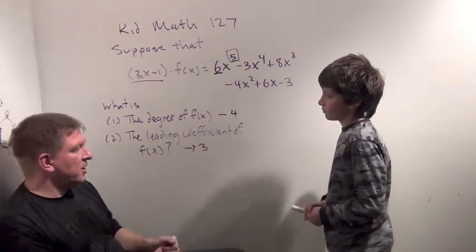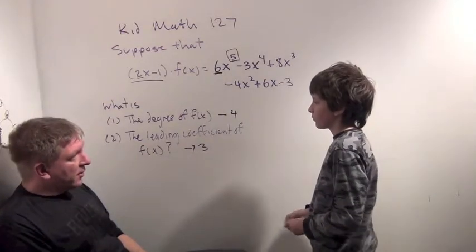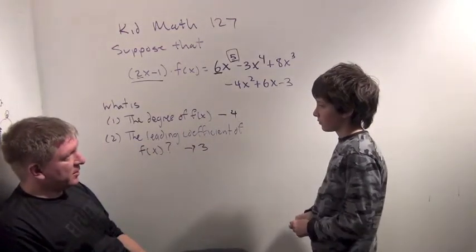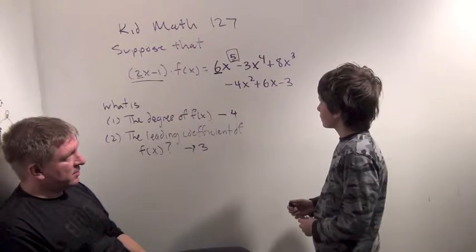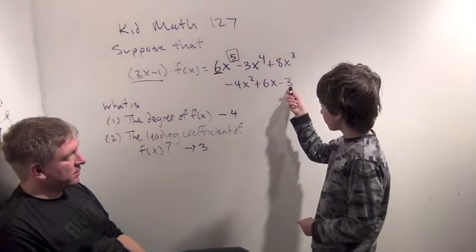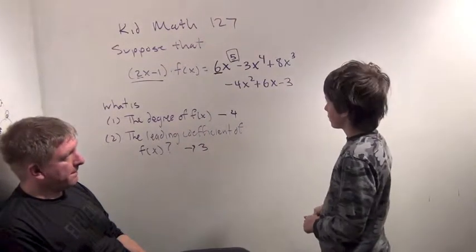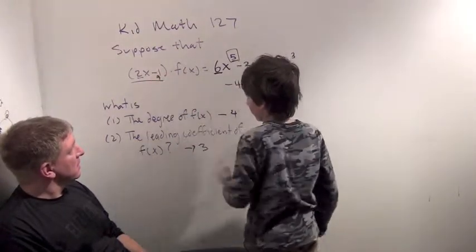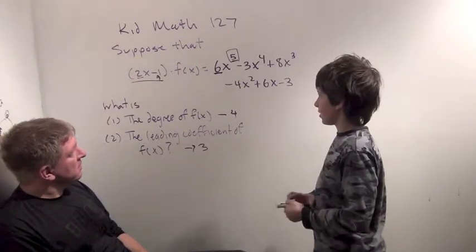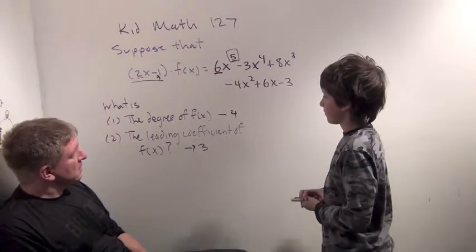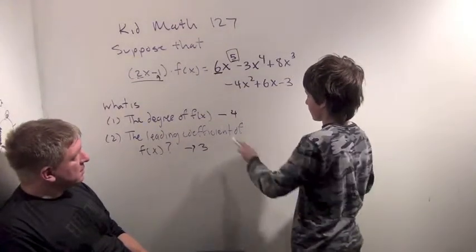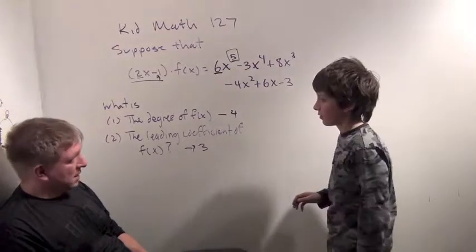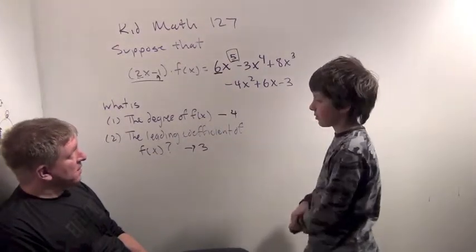Now, here's a more challenging question. There's one other term in f of x that we can know very quickly. This? Why? Because you have the constant in here, too. So you're going to need a 3 to get to minus 3. You need minus 1 times 3 to get to minus 3.